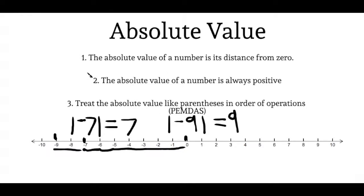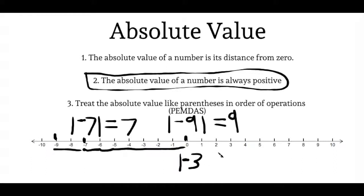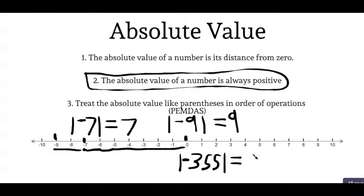For problem solving, point number two is the most important thing to remember: the absolute value of a number is always positive. For example, what's the absolute value of negative three hundred fifty-five? The number line won't help here since it only goes to negative ten, so we just remember that the absolute value is always positive. Therefore, the absolute value of negative three hundred fifty-five is simply three hundred fifty-five.